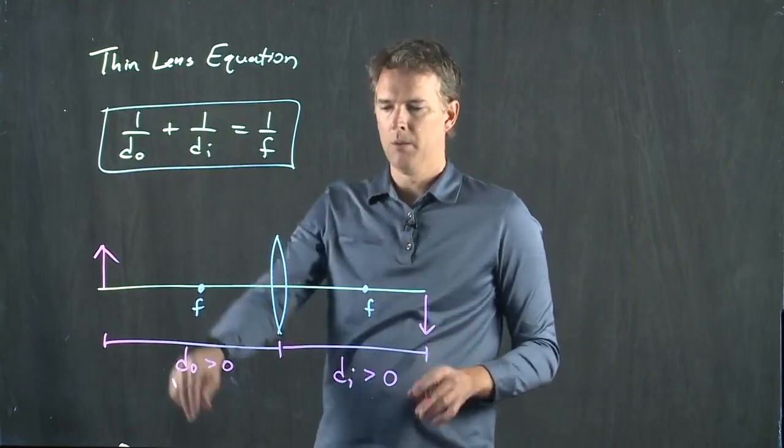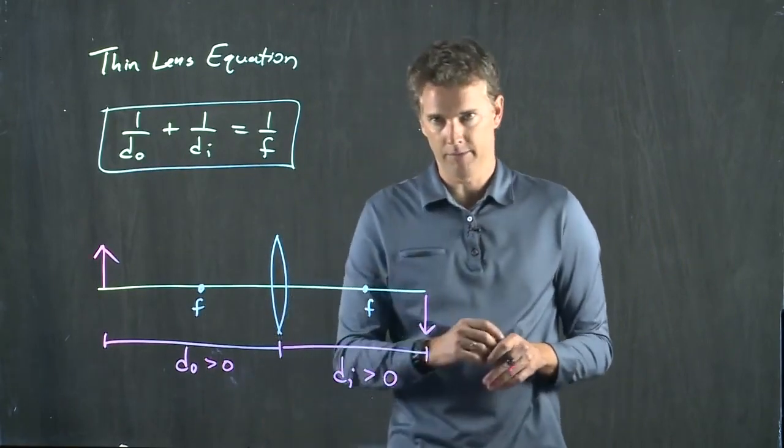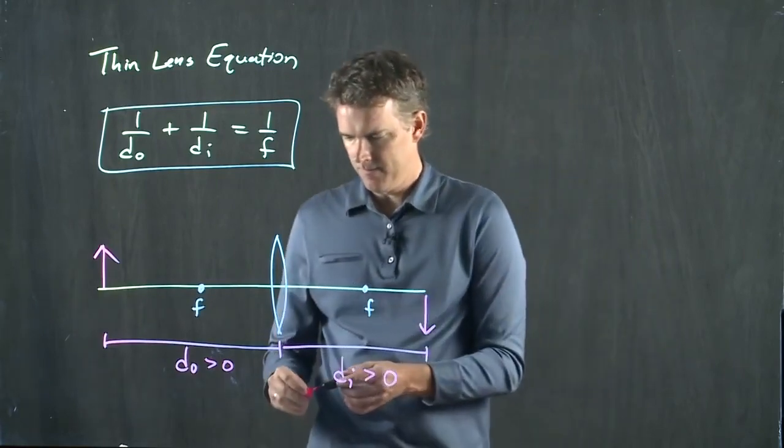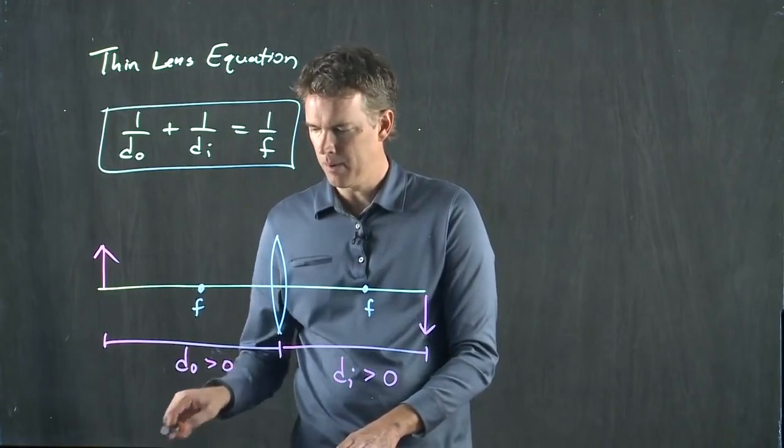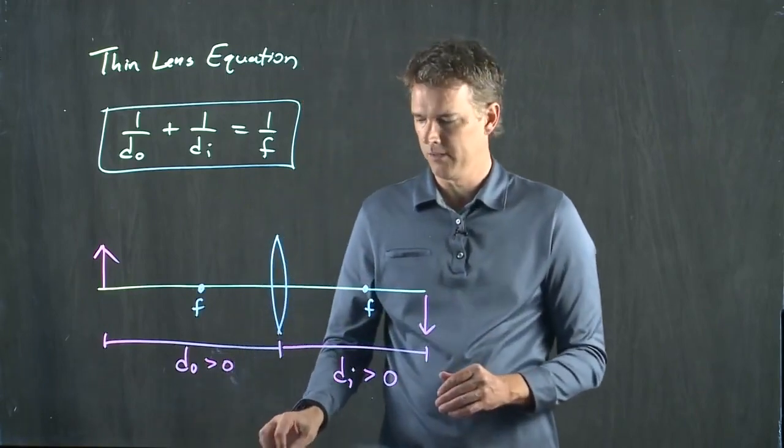1 over DO plus 1 over DI equals 1 over F. All right. Let's see how that applies for a real example.